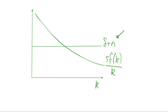We have a graph that looks something like this. This depreciation or break-even constant is just a constant, so it's just a horizontal line. Our savings output divided by capital per capita is a decreasing function that looks something like this. What this says is that we have a steady state level of capital k*, where these two terms are equal — our break-even investment term equals our actual investment term, both divided by capital per capita.